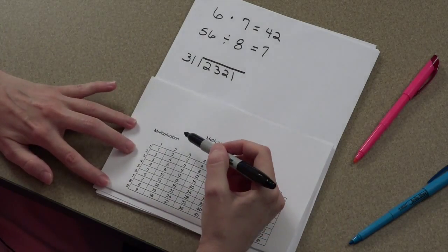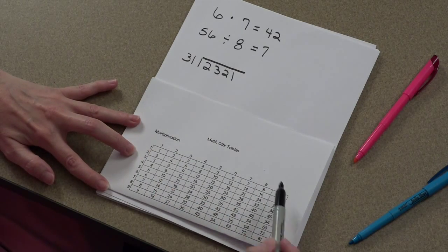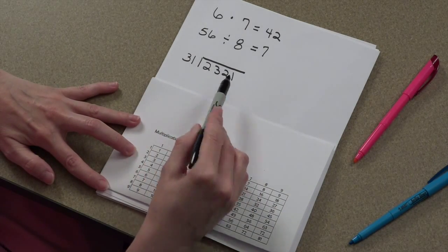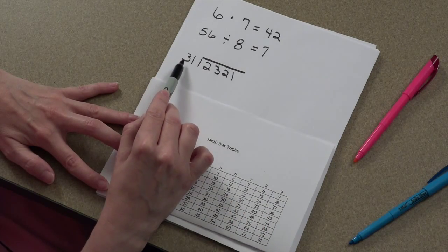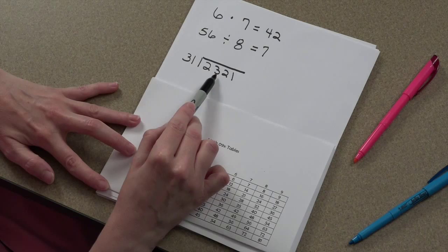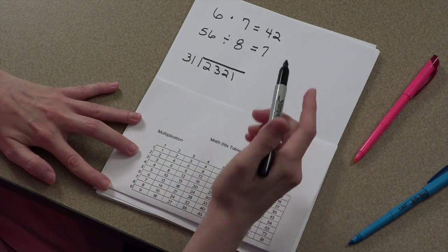Now we don't have 31's, and we don't have 2,321's in here, but we have 3 and 23. So what we can do is we can estimate.